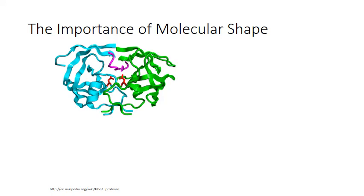Here's an example. This is an artist's representation of the HIV protease enzyme — an enzyme produced by the human immunodeficiency virus as a critical component of its replication process in a host cell. Now, enzymes are very large molecules, and it would be impossible to depict each individual atom in the structure.